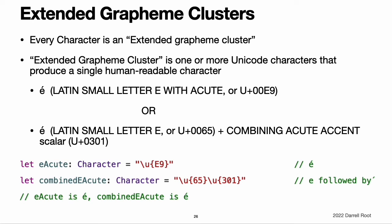Every instance of Swift's Character type represents a single extended grapheme cluster. An extended grapheme cluster is a sequence of one or more Unicode scalars that, when combined, produce a single human-readable character. The letter E with accent can be represented by the single Unicode scalar Latin small letter E with acute. However, the same letter can also be represented as a pair of scalars — a standard letter E (Latin small letter E) followed by the combining acute accent scalar. The combining acute accent scalar is graphically applied to the scalar that precedes it, turning an E without accent into an E with accent when rendered by a Unicode-aware text rendering system. In both cases, the letter E with accent is represented as a single Swift Character value that represents an extended grapheme cluster.